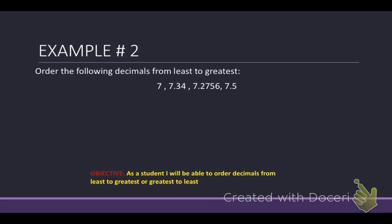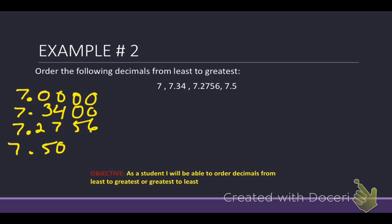So this one we have seven. There's no decimal. When there's decimal not in sight, it is on the right. So we're going to go ahead and put the decimal point there. 7.34, 7.2756, and finally 7.5. Put zeros as placeholders, which is quite a few of them. Okay, and we're going to go ahead and start on the left. Sevens are all the same. We have a zero, a three, a two, and a five. Which one is the smallest?